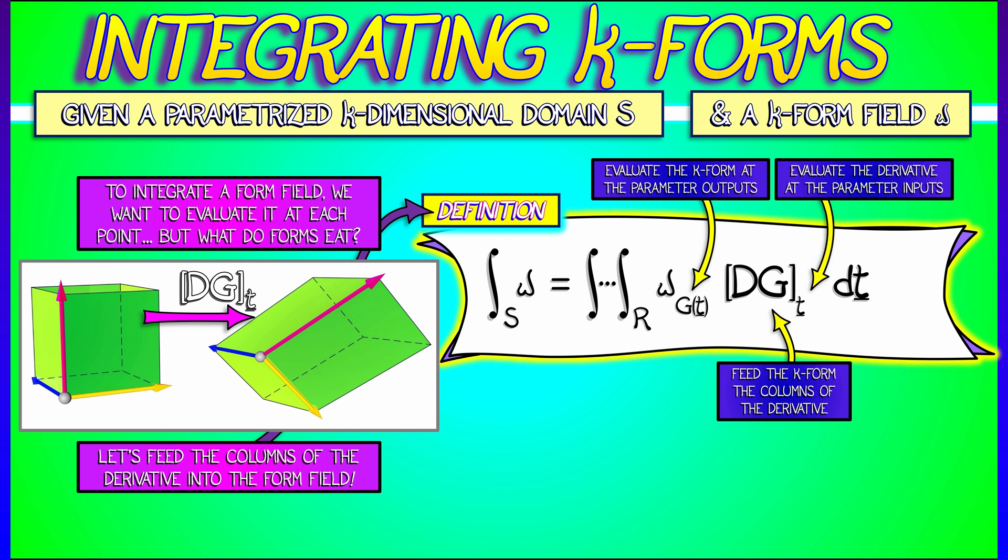And then we integrate this over the k parameters, dT1, dT2, all the way up through dTK. We integrate that over the region.